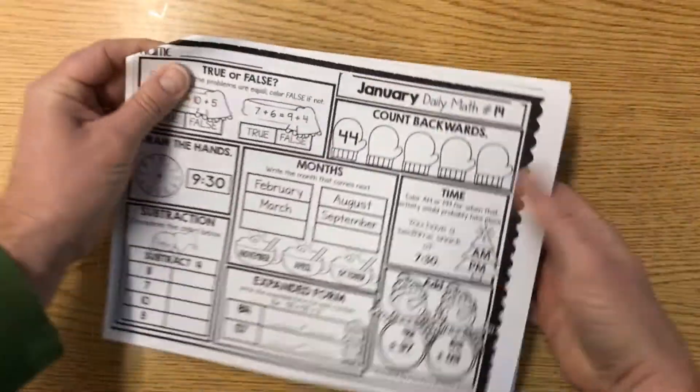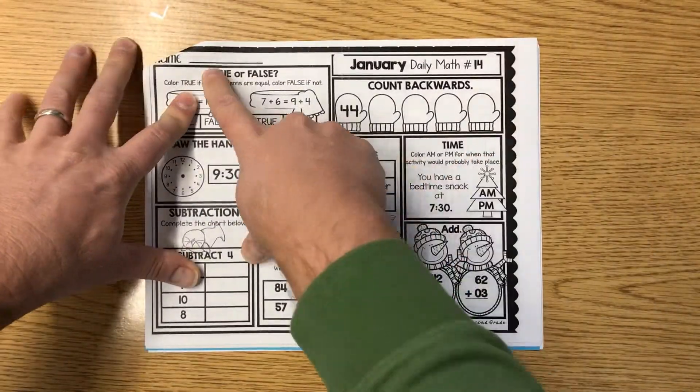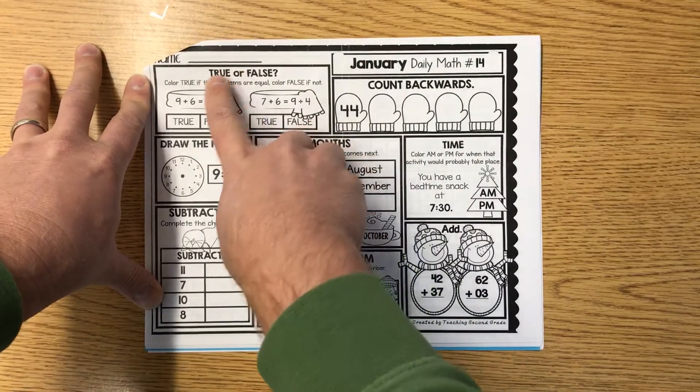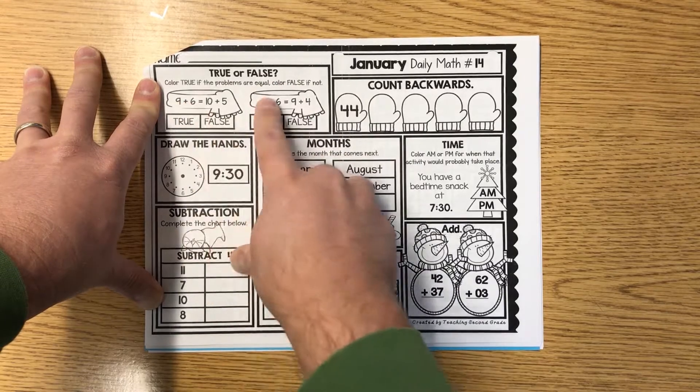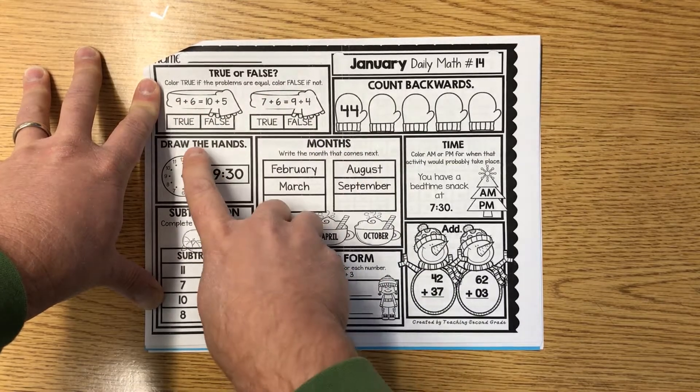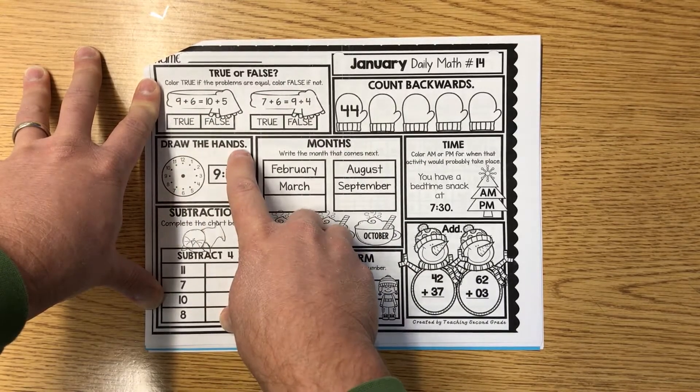Let's go ahead and go to 14. All right, looking at 14, name on the line. True or false? Color true if the problems are equal. Color false if they're not. All right, here we go.